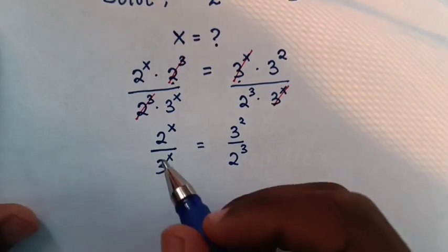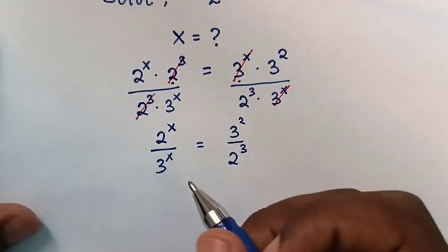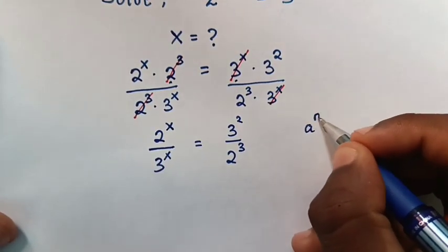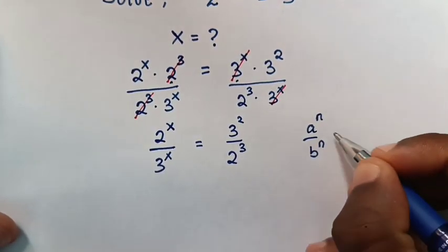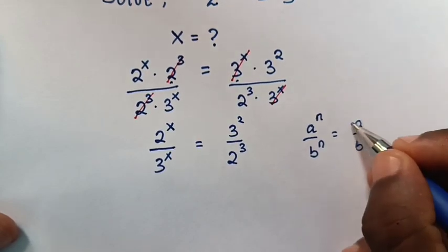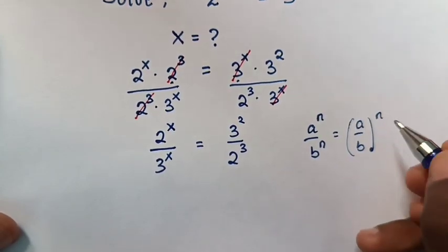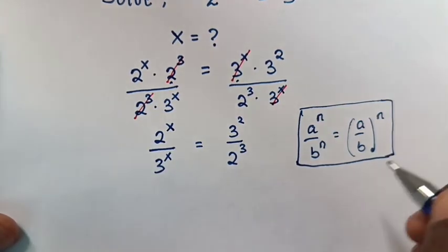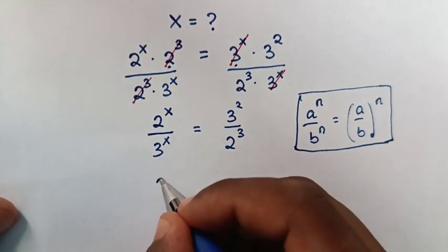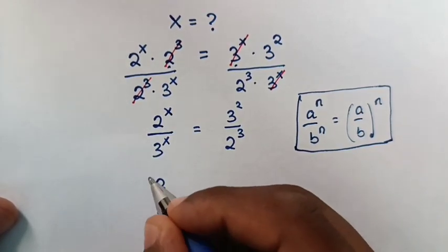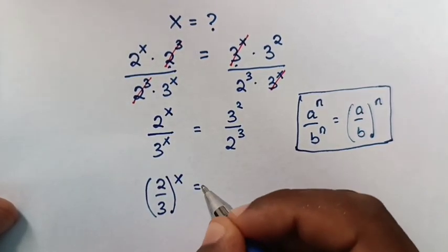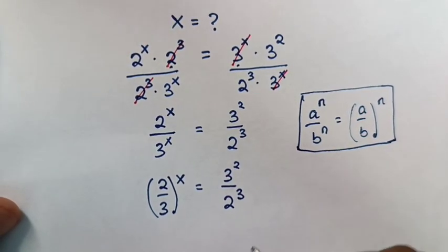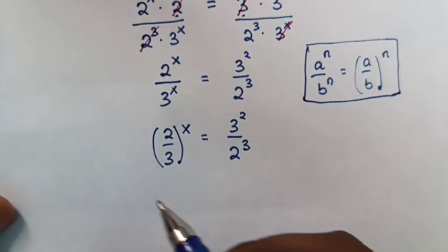Now from here we can see the common power of x on both sides, so we will apply the exponential rule that a power n over b power n is equal to (a over b) bracket power n. So in our equation it will be (2 over 3) bracket power x is equal to 3 squared over 2 power 3.